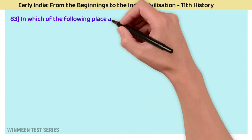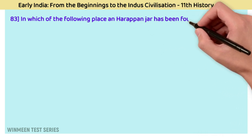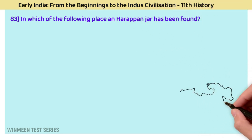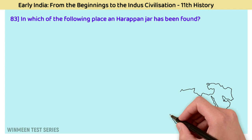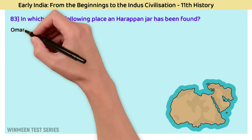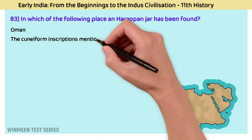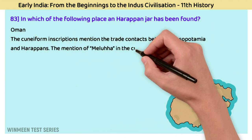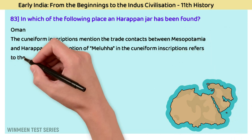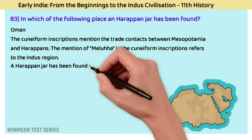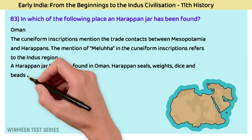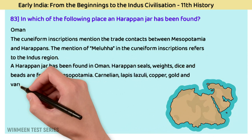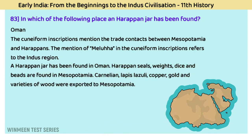Question 83: In which place has a Harappan jar been found? The answer is Oman. Cuneiform inscriptions mention trade contacts between Mesopotamia and the Harappan civilization; the mention of 'Meluha' in cuneiform inscriptions refers to the Indus region. A Harappan jar has been found in Oman. Harappan seals, weights, dyes, and beads are found in Mesopotamia. Carnelian, lapis lazuli, copper, gold, and varieties of wood were exported to Mesopotamia.